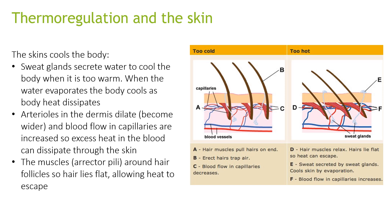The skin cools the body through several mechanisms. Sweat glands secrete water to cool the body when it is too warm — when the water evaporates, body heat dissipates. Arterioles in the dermis dilate and blood flow in the capillaries increases so excess heat in the blood can dissipate to the skin. The muscles around hair follicles relax so hair lies flat, allowing heat to escape. In the cold scenario, hair muscles pull hairs upright, trapping air and blood flow in the capillaries decreases. In the too hot scenario, hair muscles relax, hairs lie flat, sweat is secreted by sweat glands, and blood flow in the capillaries increases.